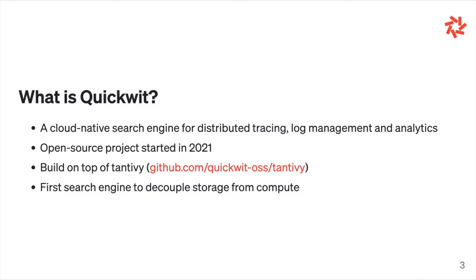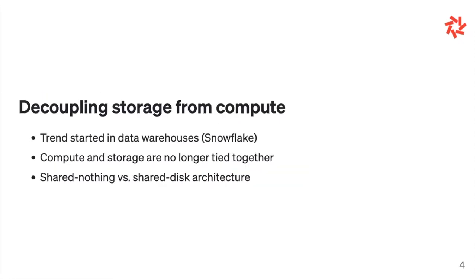What's really different about QuickWit is it's the first search engine to decouple storage from compute. It's been a buzzword for the last few years — everybody wants to decouple storage from compute. It's a trend that started in the data warehouse space. Snowflake made it really popular, though some other companies moved the data warehouse to S3 before Snowflake — I'm thinking in particular about Netflix.